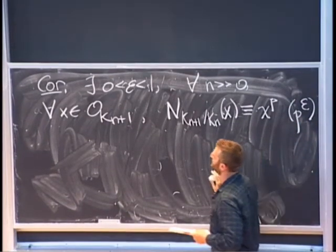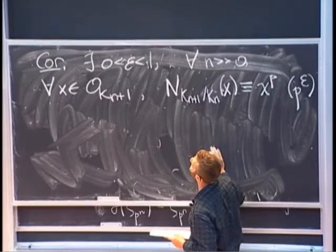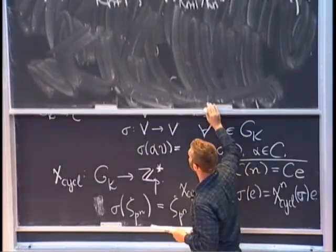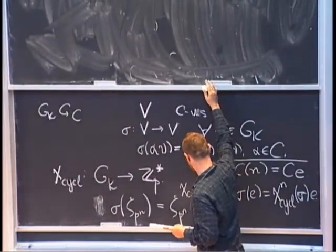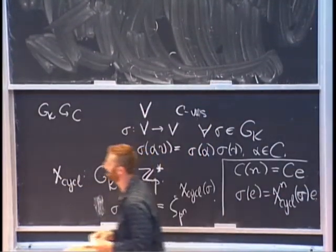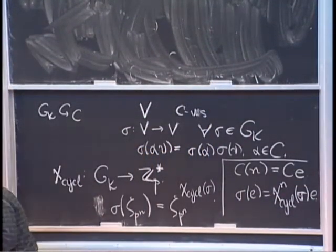So as a corollary: there exists ε ∈ (0,1) such that for all n large enough and for all x in O_{K_{n+1}}, the norm N_{K_{n+1}/K_n}(x) ≡ x^p (mod p^ε). Since this is the product of the conjugates of x, those are all congruent to x mod p^ε.